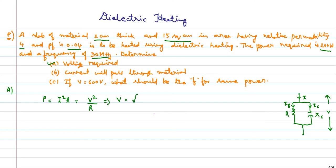To find voltage, V = √(P·R). Power is 200 watts, but we need resistance R. To find R, we use the power factor cos φ. The power factor cos φ is given as 0.04, so we need to work with this relationship.